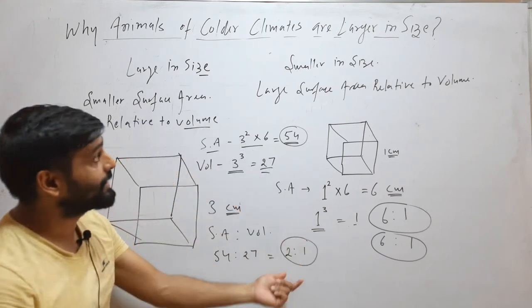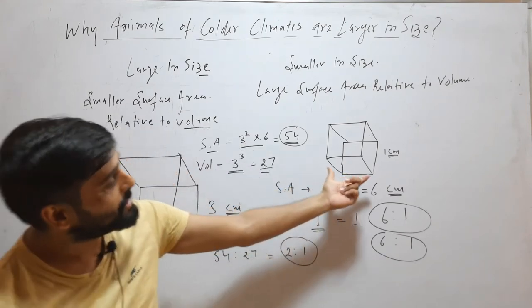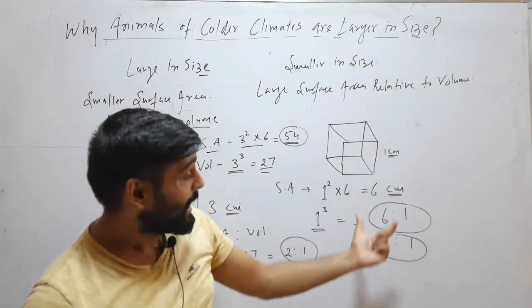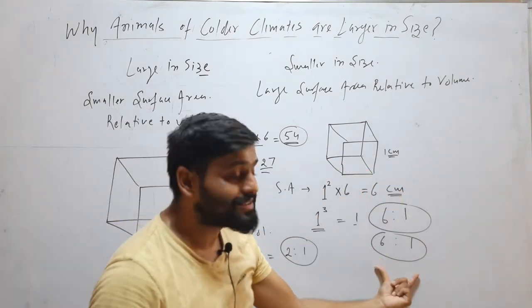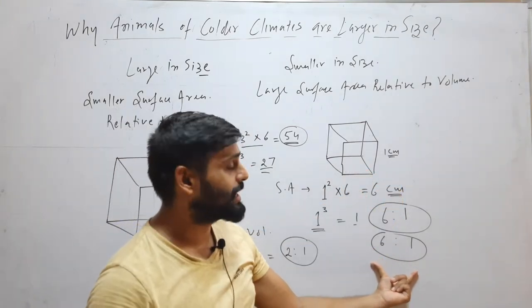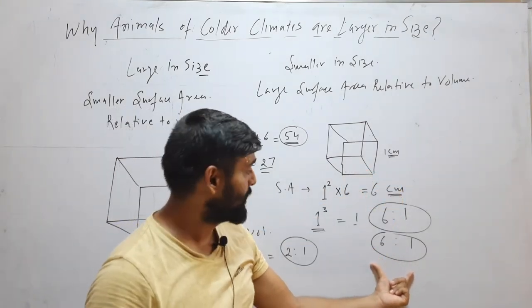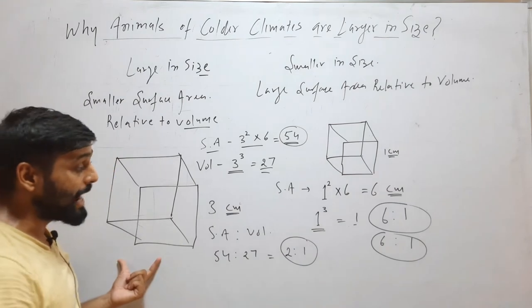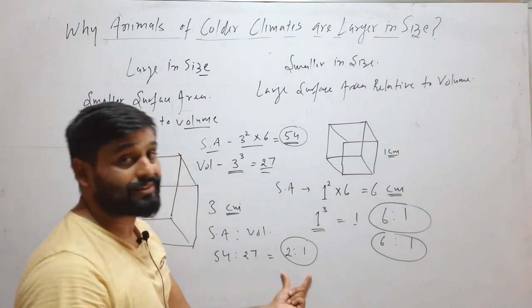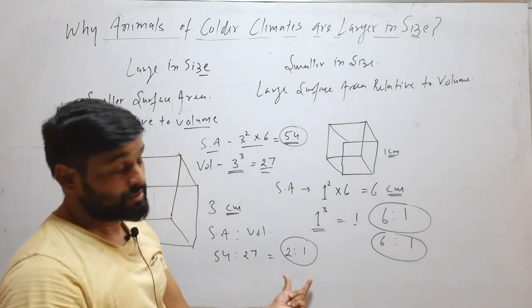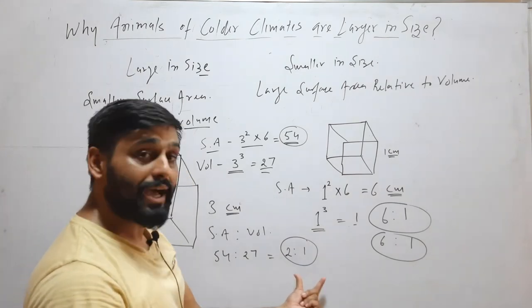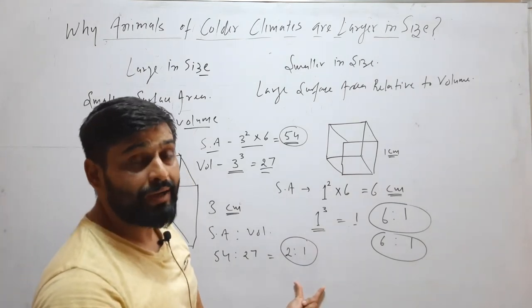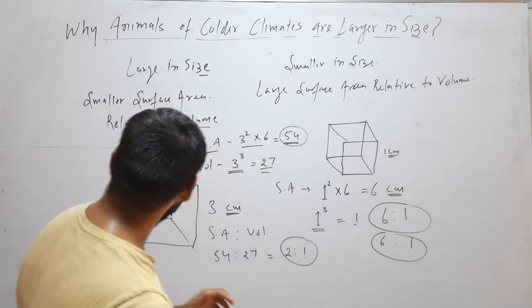So here you can see that the smaller cube has a larger surface area relative to volume, but the larger cube has a smaller surface area relative to volume.